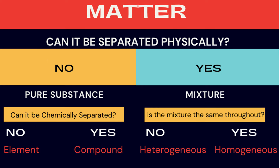Now let's go back to the top of the flow chart. Can it be separated physically? If yes, it's a mixture. Then ask: is it uniform throughout? If yes, it's a homogeneous mixture. If no, then it's a heterogeneous mixture.